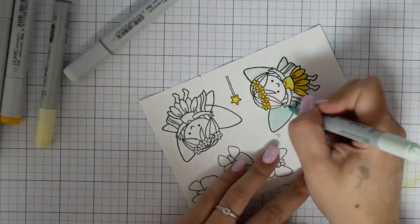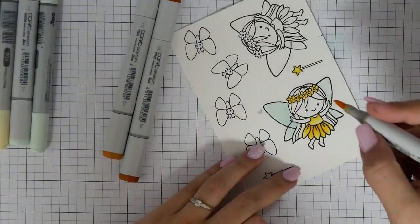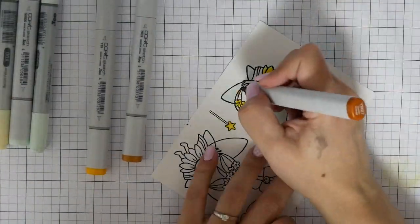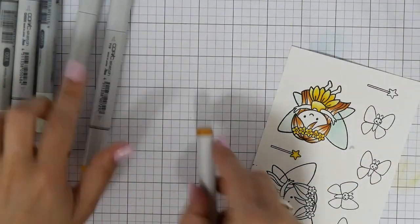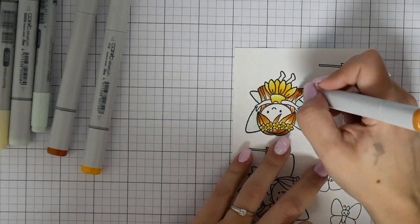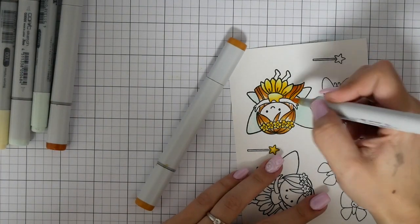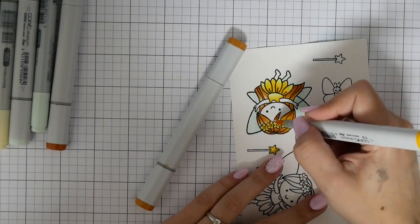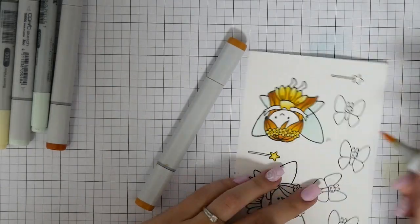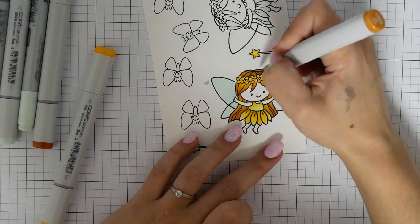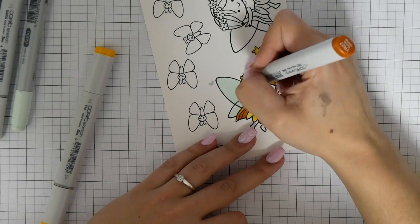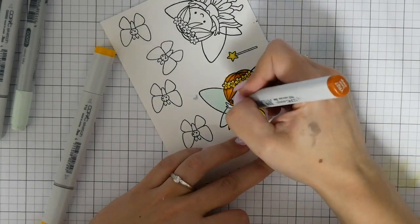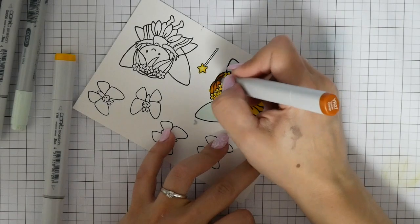I'm using here my G000 for the fairy wings and I'm using some red yellow markers for the hair. I'm really happy with the result. I'm going from darkest to lightest color because I find you don't really see the difference.